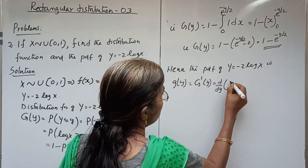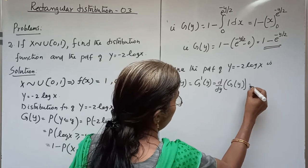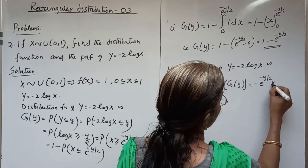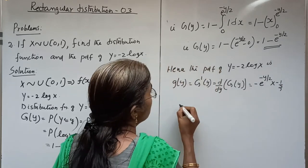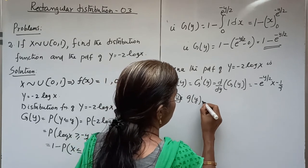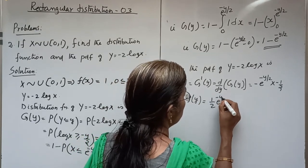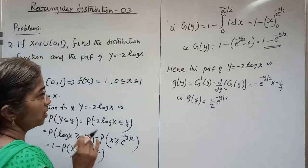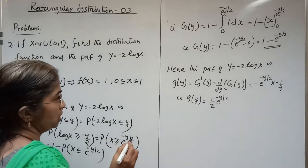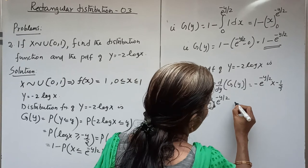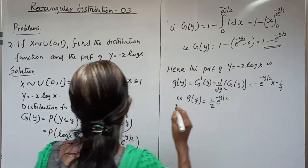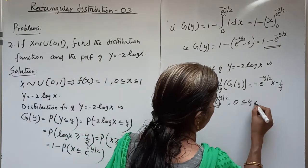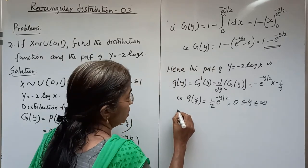The derivative gives g(y) = -e^(-y/2) × (-1/2) = (1/2)e^(-y/2). We obtain the limits for y: when x = 0, we get y = infinity, and when x = 1, we get y = -2 log 1 = 0. So the range of y is 0 ≤ y < ∞.